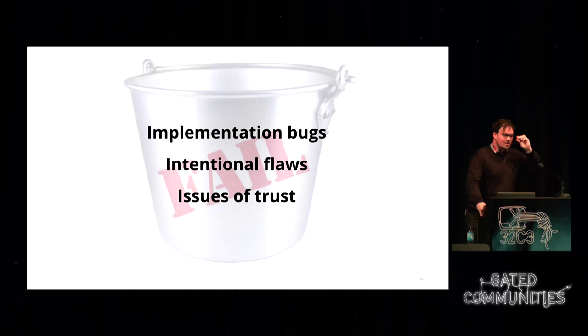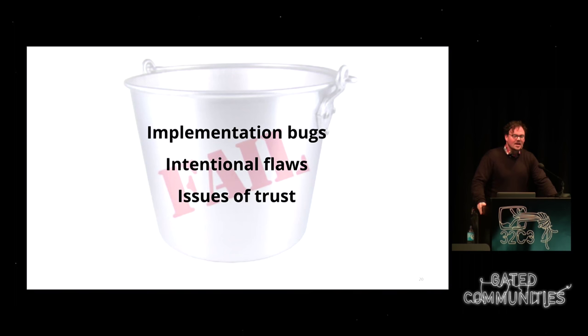This whole chain of trust thing seems really easy, right? It's just checking digital signatures and making sure that the metadata inside is correct and matches the site you're going to. Well, boy, were we wrong about that being easy. I'm going to explore a couple different ways in which this was completely messed up, including implementation bugs, intentional flaws, and issues of trust.